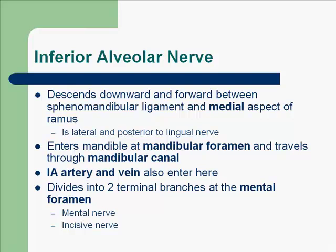The inferior alveolar nerve divides into two terminal branches at the mental foramen: the mental nerve and the incisive nerve.